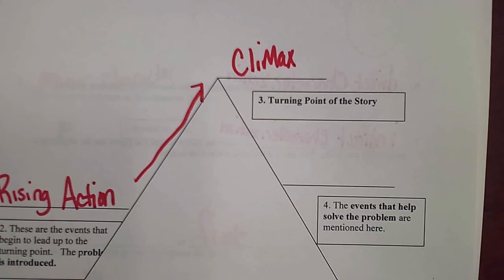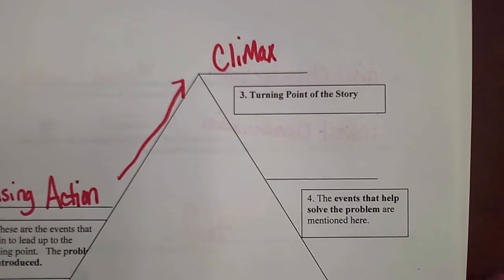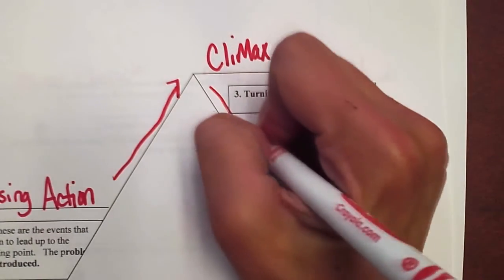So you will see a high point and turning point, then some events, then another high point, then other events that help solve that problem. There can be more than one problem in the story too. Once we get to the climax, we start going down the mountain and we have our falling action.